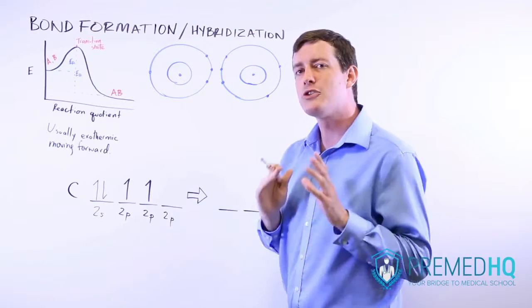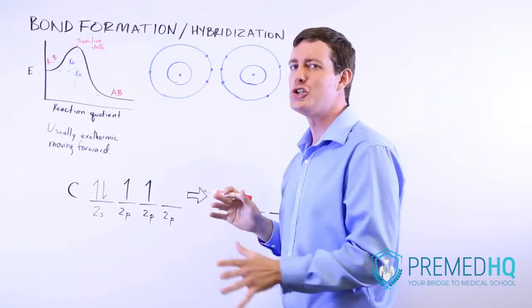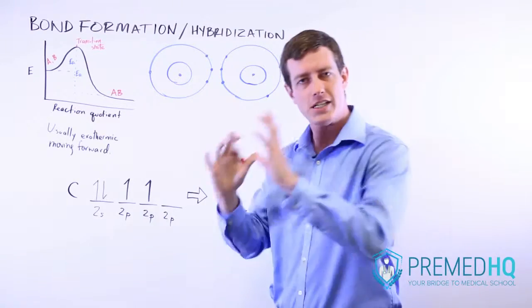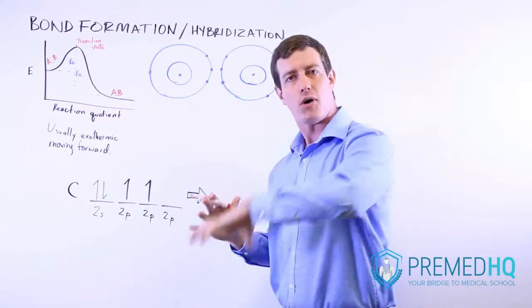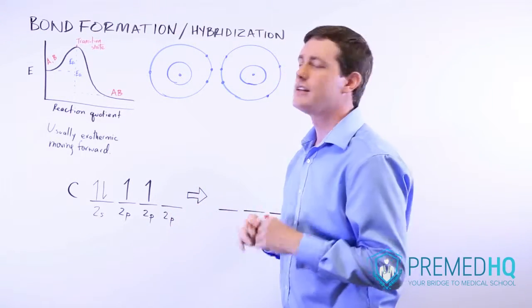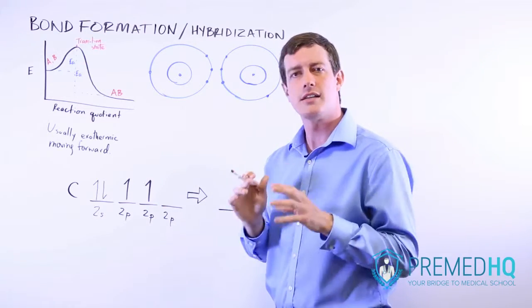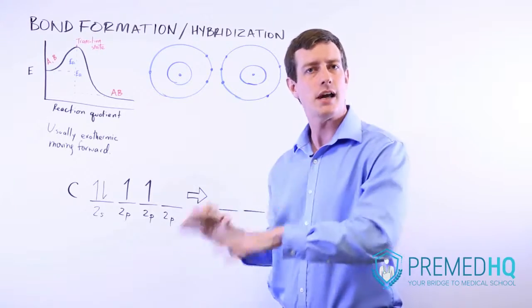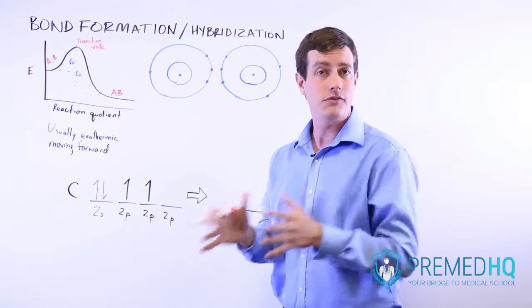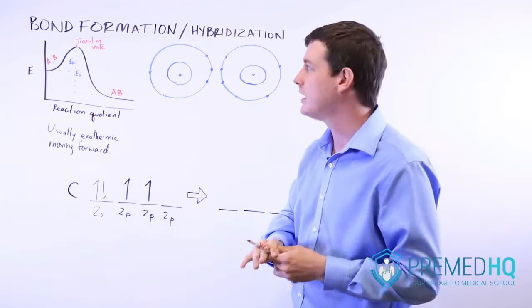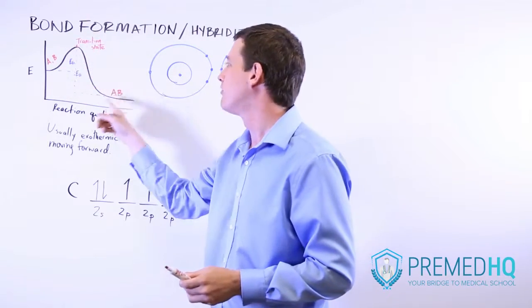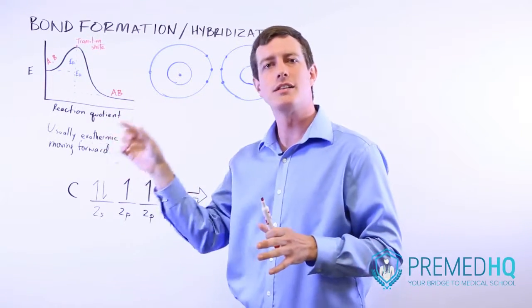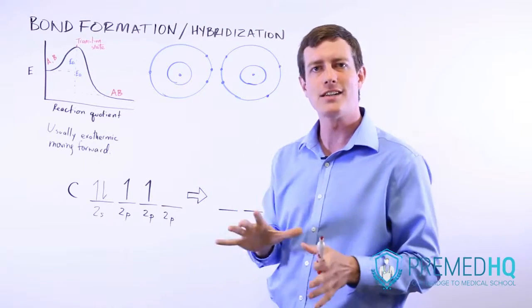Now be aware that the transition state and intermediate are two different things. A transition state is a phase between not bonding and bonding that allows the bond to occur, whereas an intermediate is a product that is made and then used up in the middle of a multi-step reaction. Transition state is a high energy state right before a bond happens. Intermediate is just a temporary product that's made in the middle of a multi-step reaction.